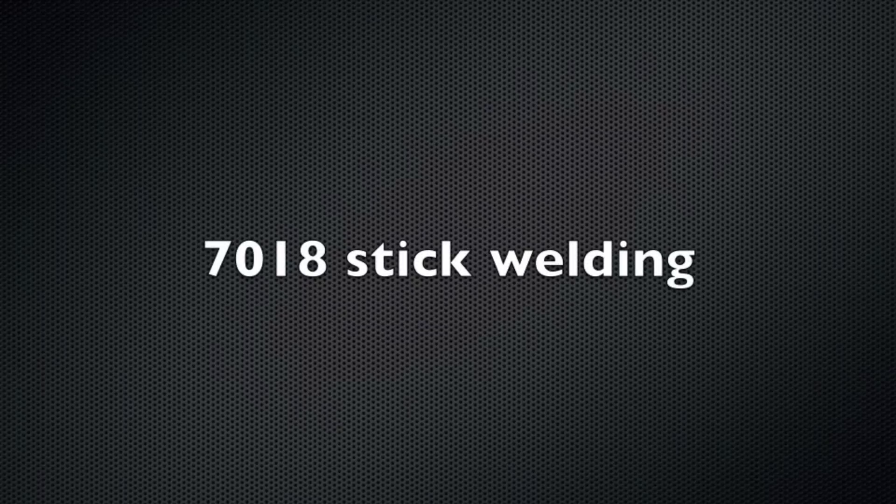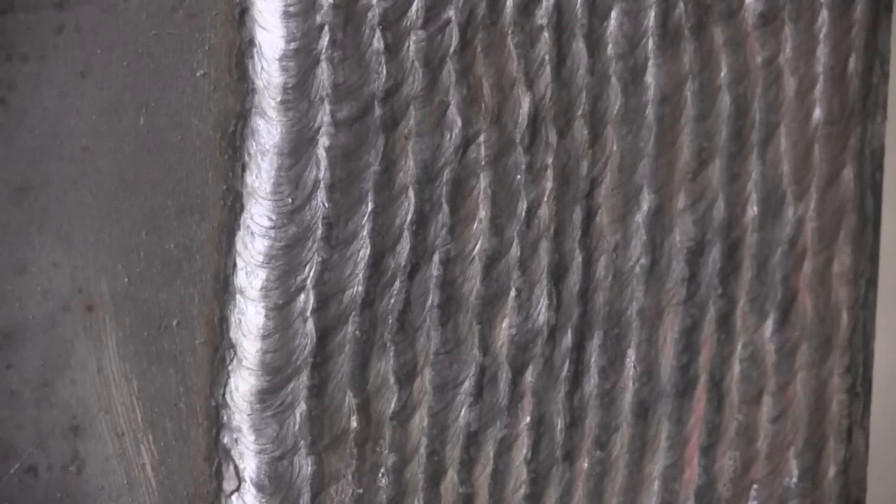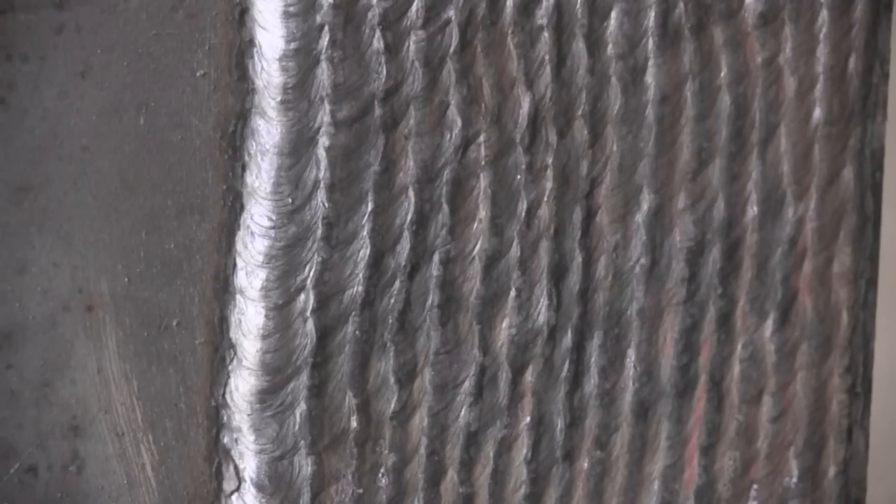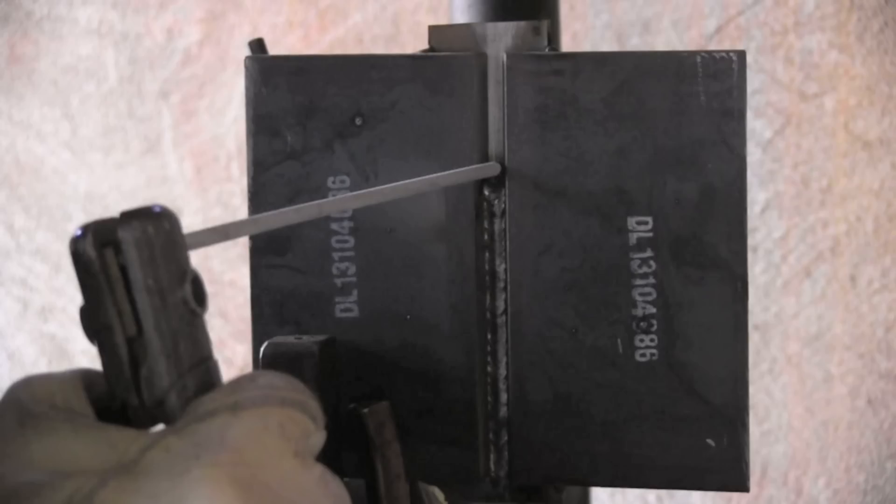7018 stick welding. Going vertical uphill can be a little bit of a problem when you're learning. Same things apply. You want to amperage hot enough to where the rod won't stick, but you can't go crazy with the amperage. Some really good practice is just padding beads like this to get your vertical technique down and your settings down.